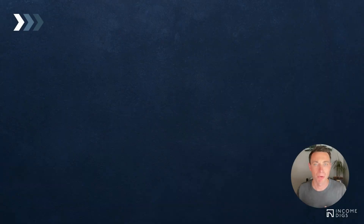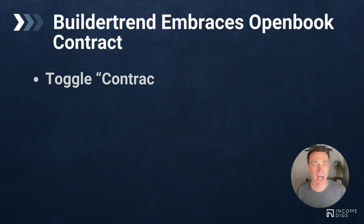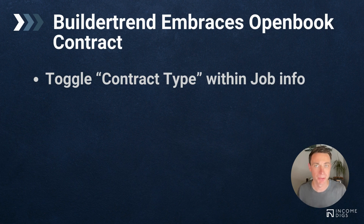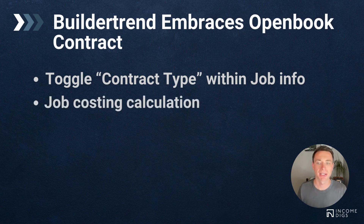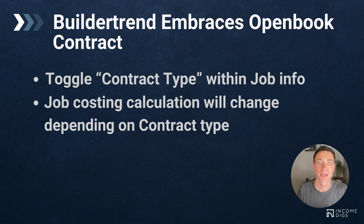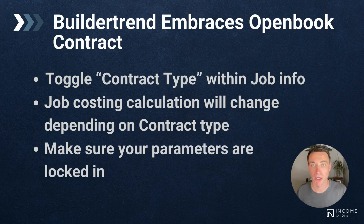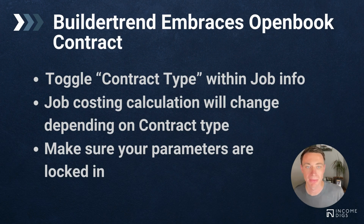They're embracing the open book contract, so you're able to toggle between contract types — something you weren't able to do before. In the past, Buildertrend has been set up primarily for fixed price, more standard projects. Your job costing calculation will change depending on your contract type, and you have to make sure your parameters are locked in, most notably the markup that gets accounted for with an open book contract.